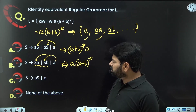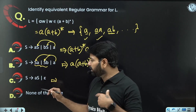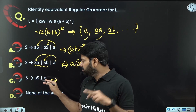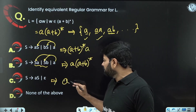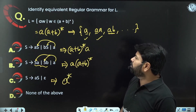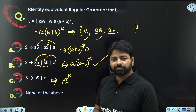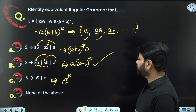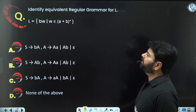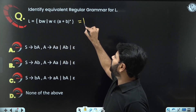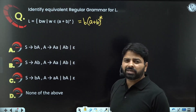Option (c) generates a* since A → a A | ε generates a* and S → a A gives a·a* = a+. Among the three options, option (b) correctly represents strings starting with 'a' using right linear grammar. So we choose option (b) as the correct answer.